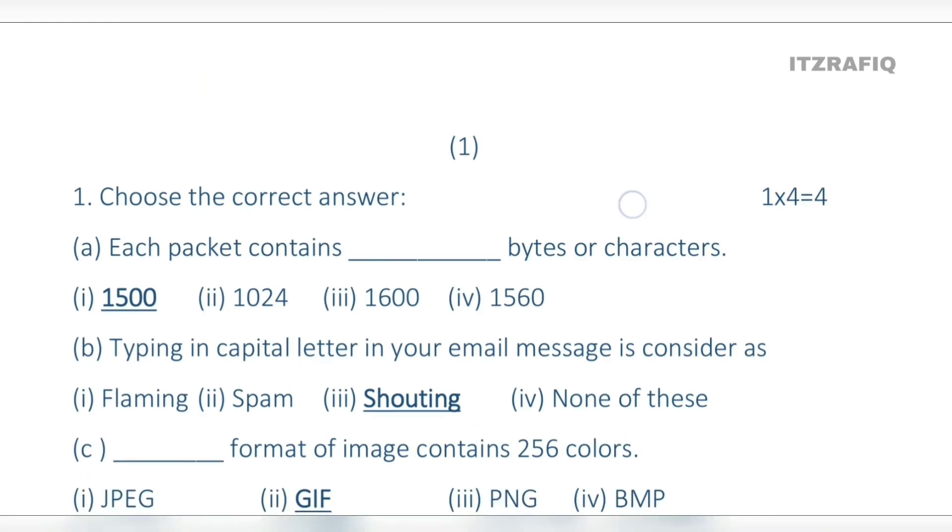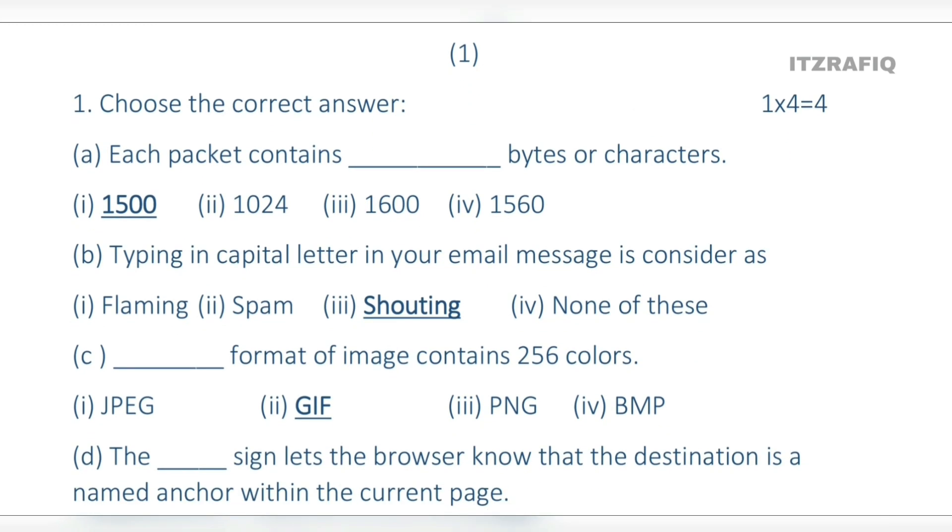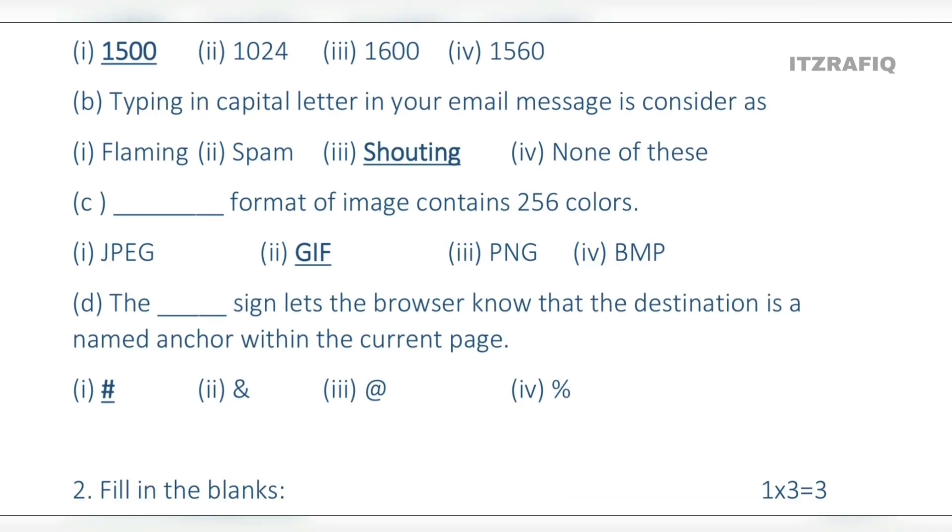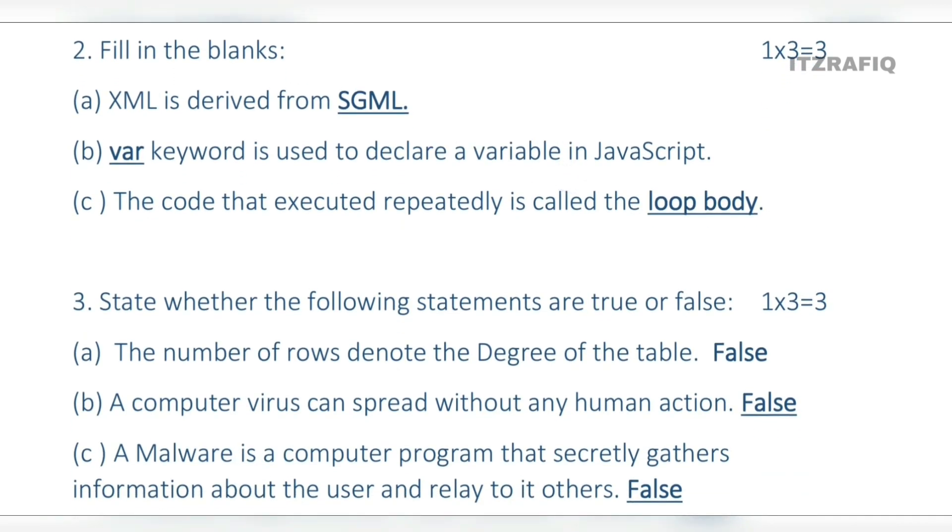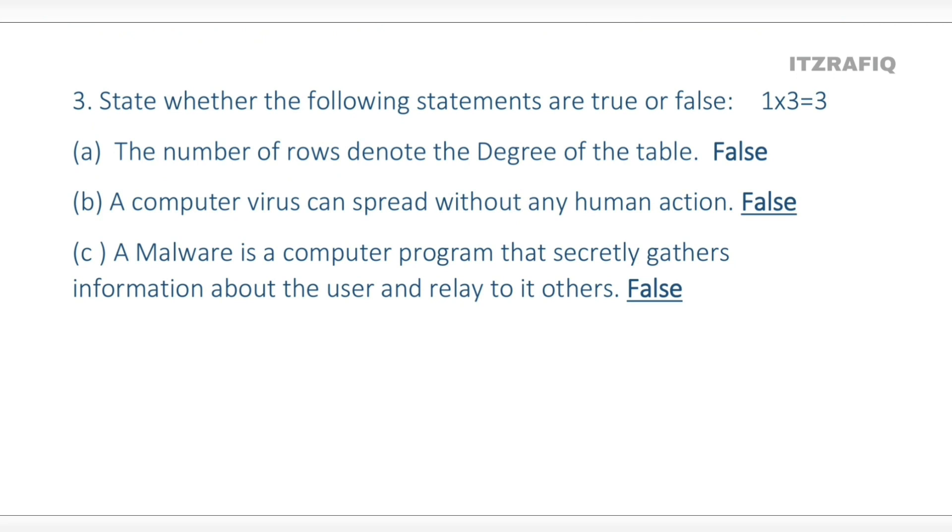First, on page one, we have fill-in-the-blanks and true-false questions. True-false: first answer is 1500, second is shouting, third is GIF. It can have a hash symbol. Fill-in-the-blanks: XML is derived from HTML; var keyword is used to declare a variable in JavaScript; the code that is executed repeatedly is called loop body.